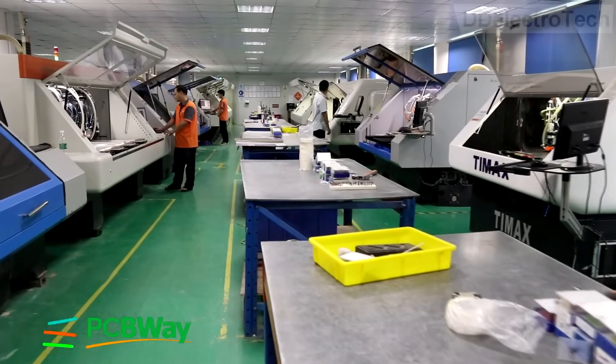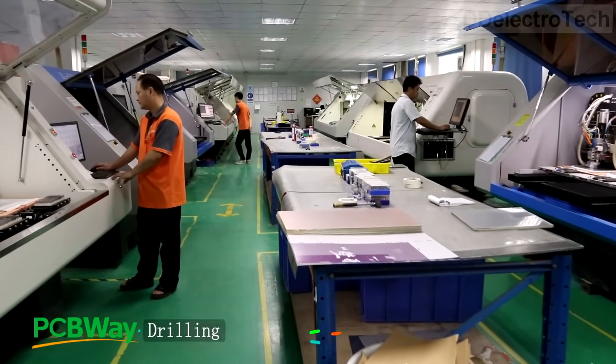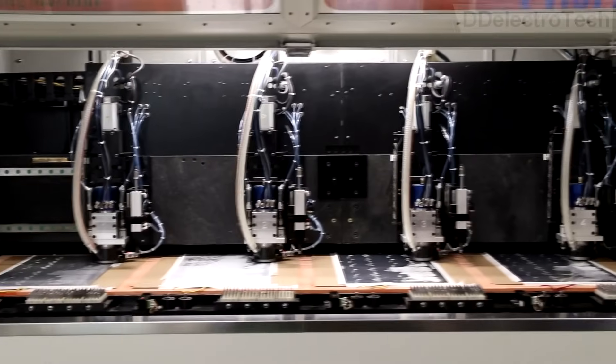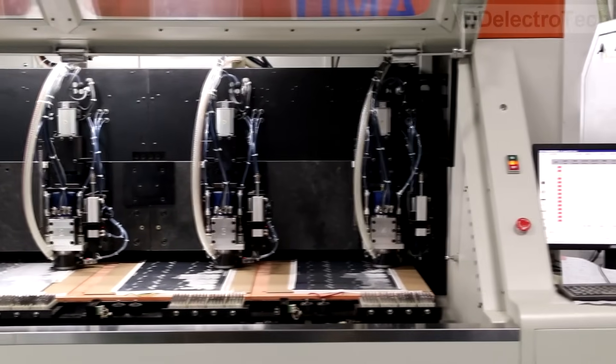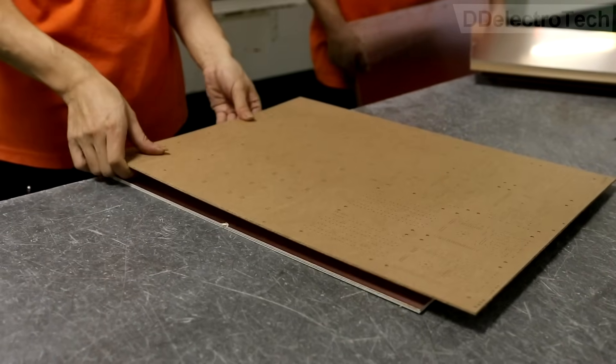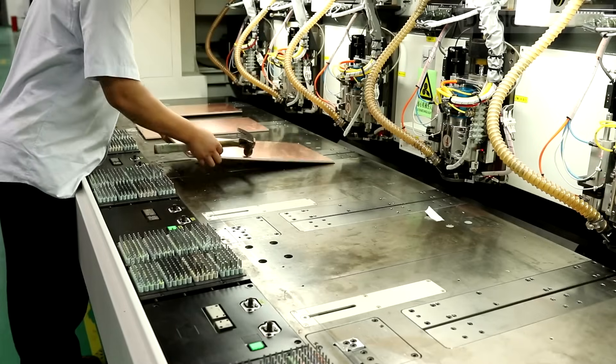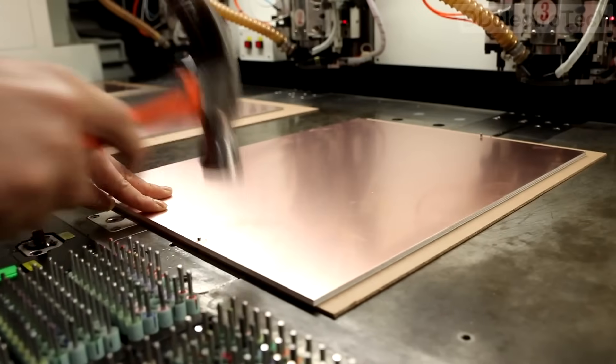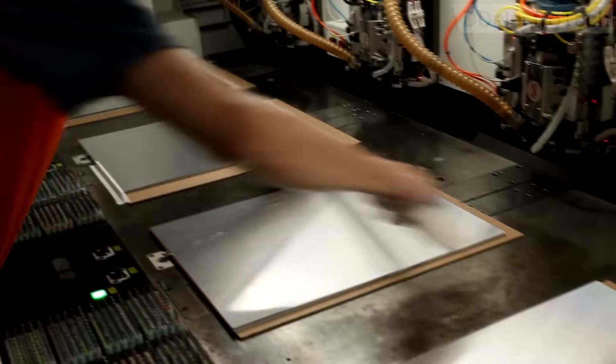After cutting the boards, they come to the drilling room. Drilling is done for two purposes: for connecting the leaded components and for the via holes that link the copper layers together. First, the operator takes an MDF board as exit material, then loads one or more PCB panels and places it on the machine, and finally adds a sheet of aluminum as entry foil.